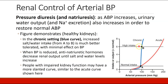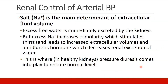Patients who have kidney disease may have a more slanted curve, while patients with healthy kidneys in the chronic setting will have a more vertical curve. One key point: salt is the main determinant of extracellular fluid volume. Any excess free water is immediately excreted by healthy kidneys to maintain normal serum osmolarity and sodium levels. If you have excess sodium, which increases osmolarity, that will stimulate thirst and anti-diuretic hormone will decrease renal excretion of water to maintain normal osmolarity. But if you have increased salt and water levels, that increases blood pressure, and pressure diuresis comes into play to restore normal levels.